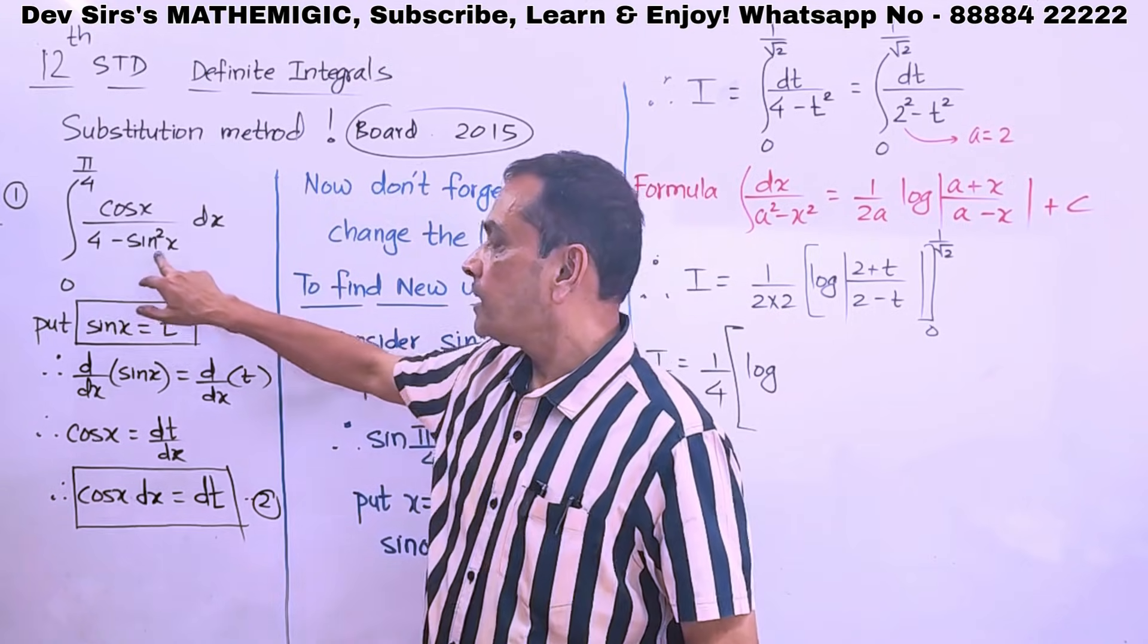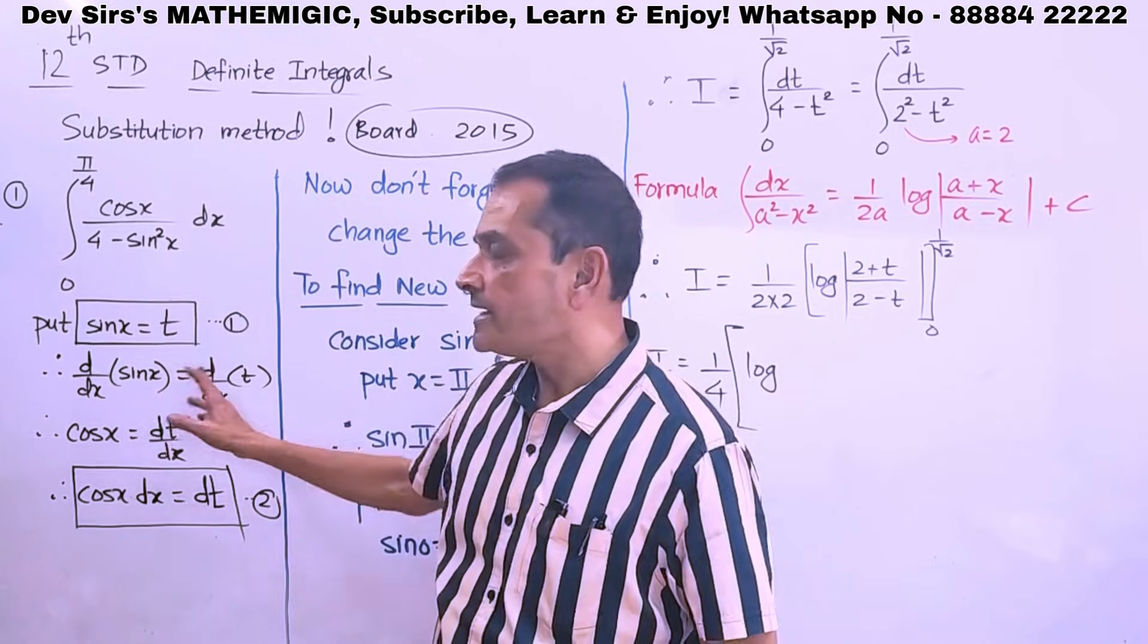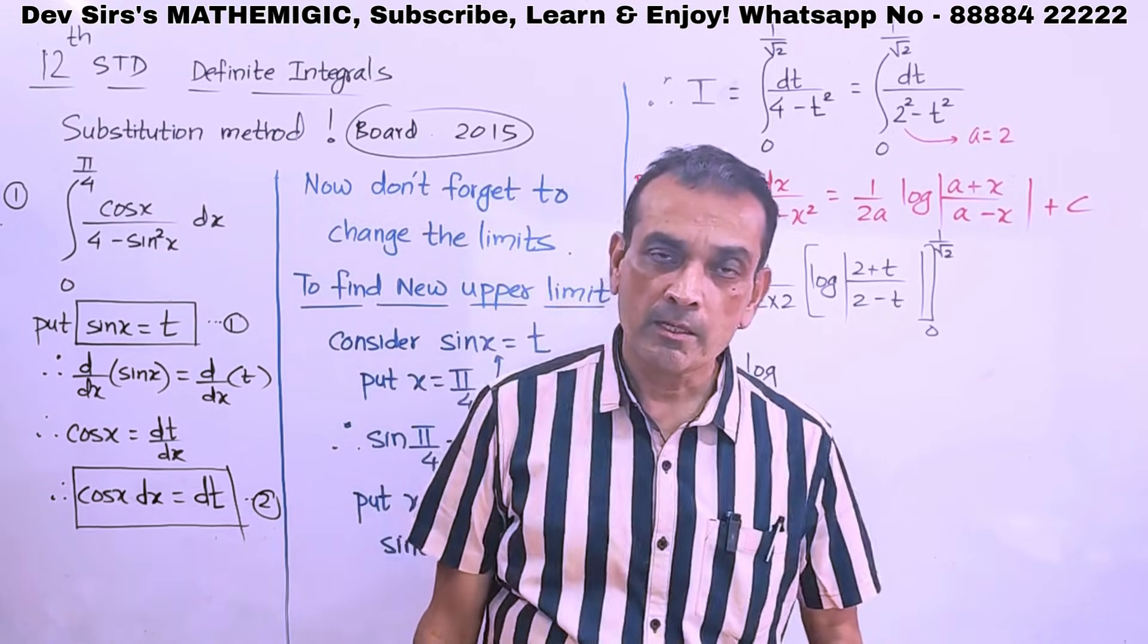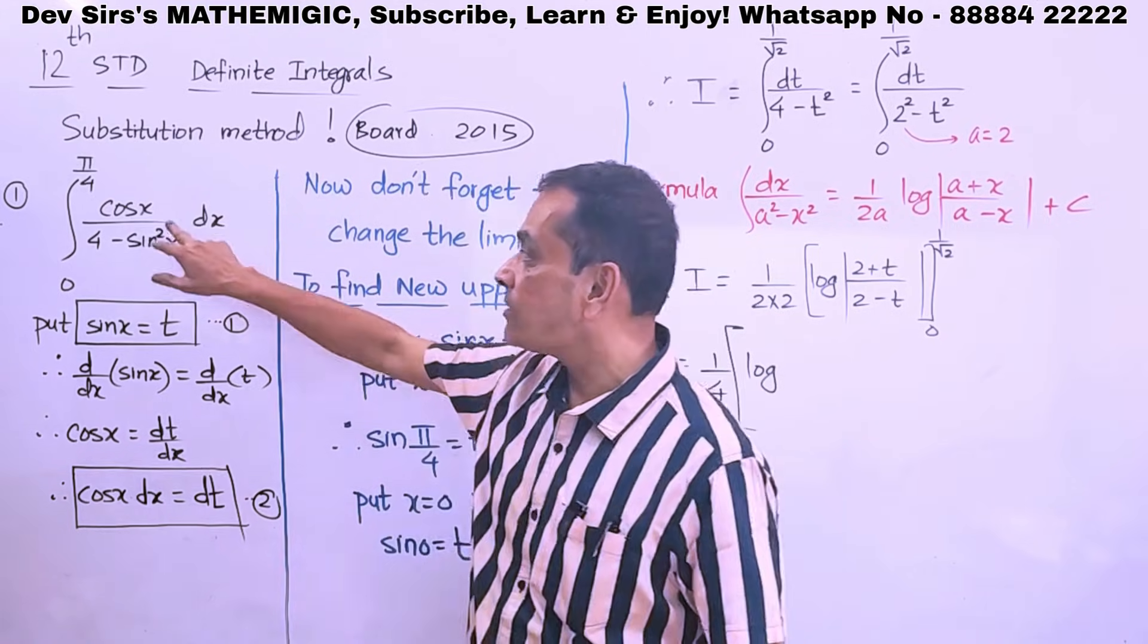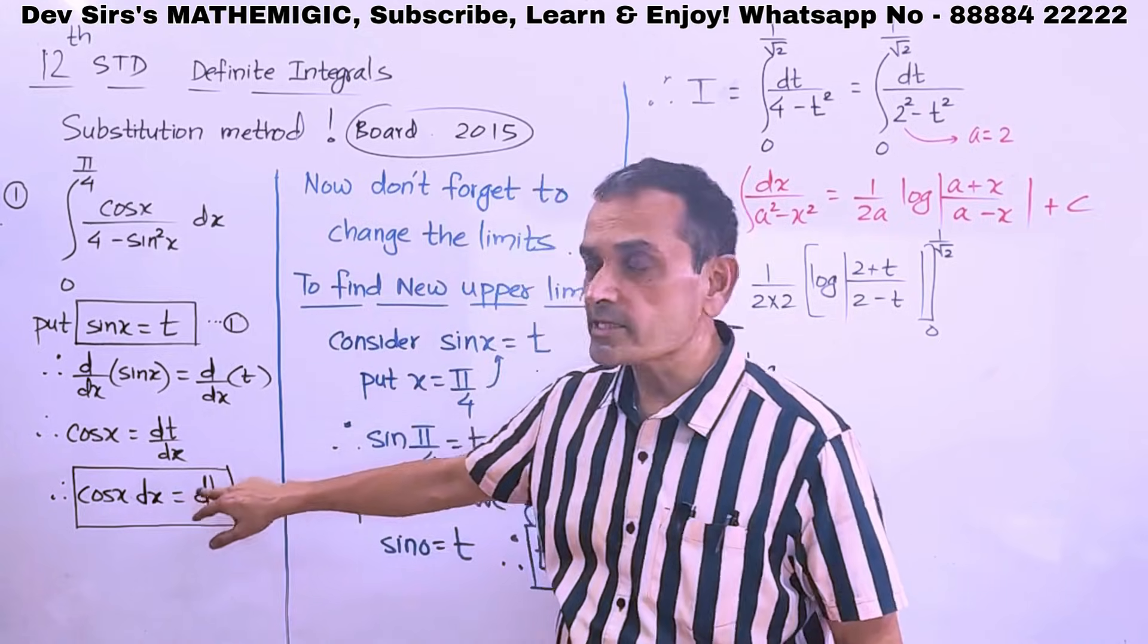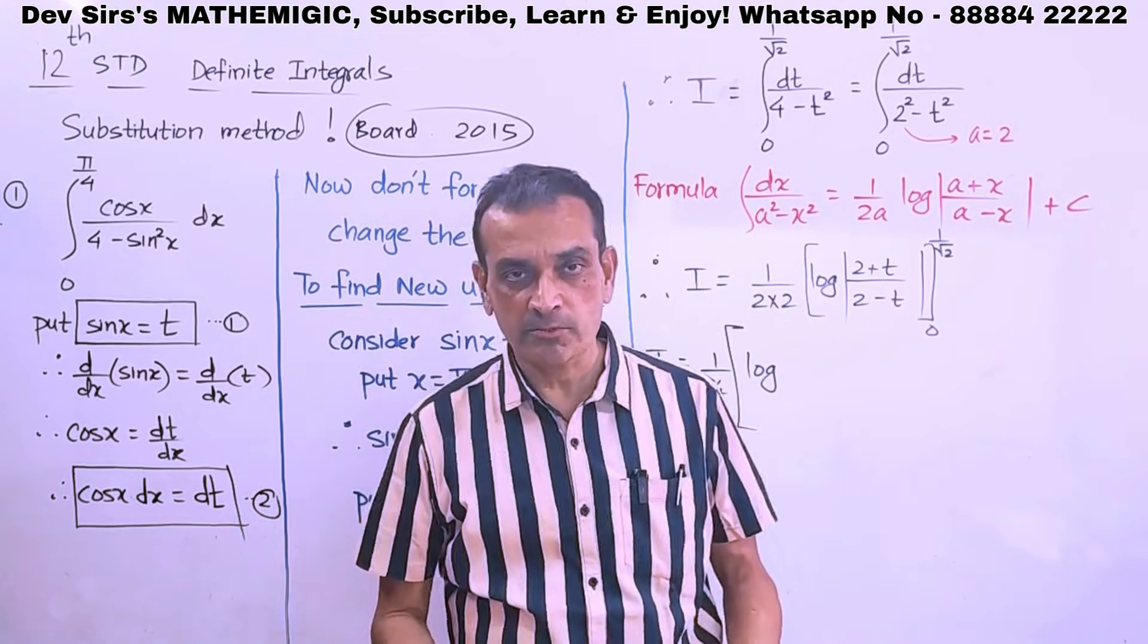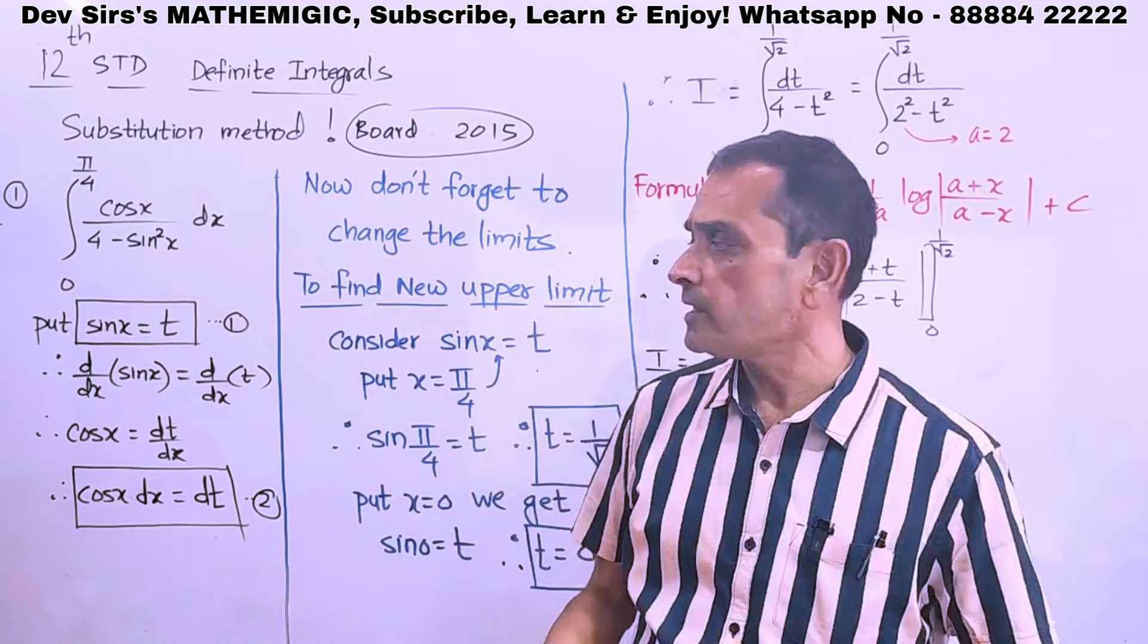For example, over here, if I put sin x equal to t, d by dx of sin x, derivative of sin x is cos x, which is present in the numerator. So, our substitution is sin x equal to t, because its derivative is there cos x dx. After cross multiplication, cos x dx automatically comes here, cos x dx. Whatever we have learnt in substitution method for indefinite integration, same thing.